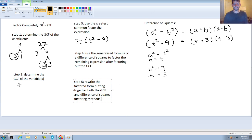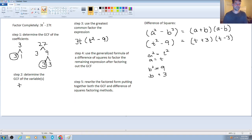So what that's going to lead us to is that our final expression is going to be the greatest common factor which was 3t and then our difference of squares factoring is going to be t plus 3 times t minus 3.